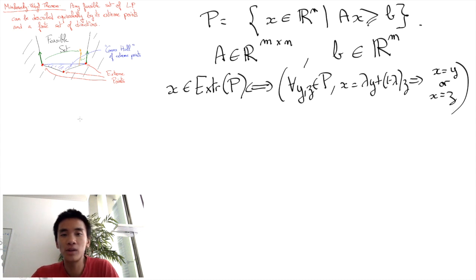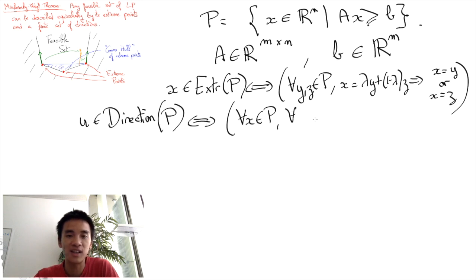Third, we need to define what a direction of a polyhedron is. A direction u of the polyhedron is such that whenever I take any point x in the polyhedron, then x plus alpha u is also in P for any non-negative value of alpha.